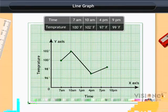What do you understand from this graph? At 7 am, the temperature is 100 Fahrenheit. After that, it increases and reaches 102.0 Fahrenheit at 10 am, which is the maximum temperature. Then it starts decreasing.